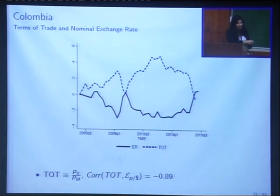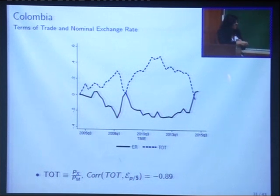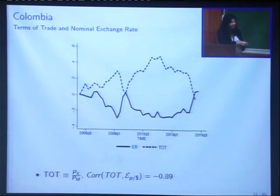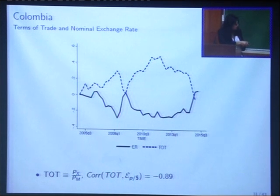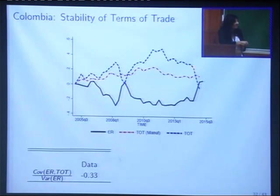This is a perfect mirror image — it all moves one-to-one in the opposite direction. When commodity prices are going down, the Colombian peso is depreciating. If you didn't know the causal sign, you would say this looks like Mundell-Fleming: when your terms of trade depreciates, your currency depreciates. But if you strip out commodity prices and look at the terms of trade excluding commodity prices, you actually get a very stable terms of trade — consistent with the DCP paradigm.